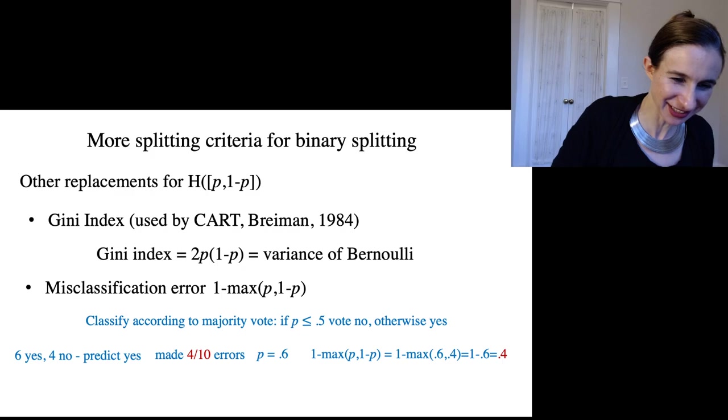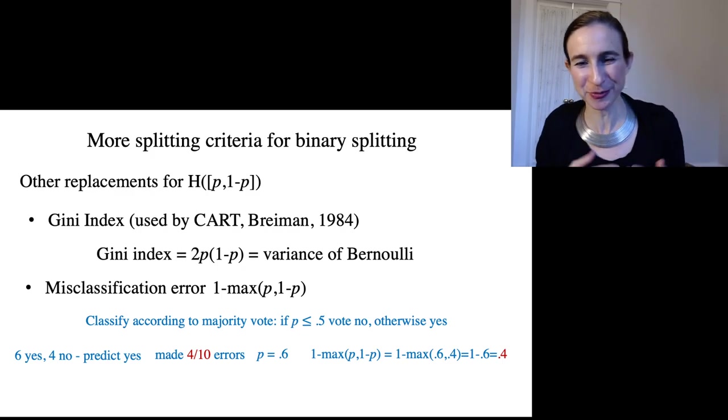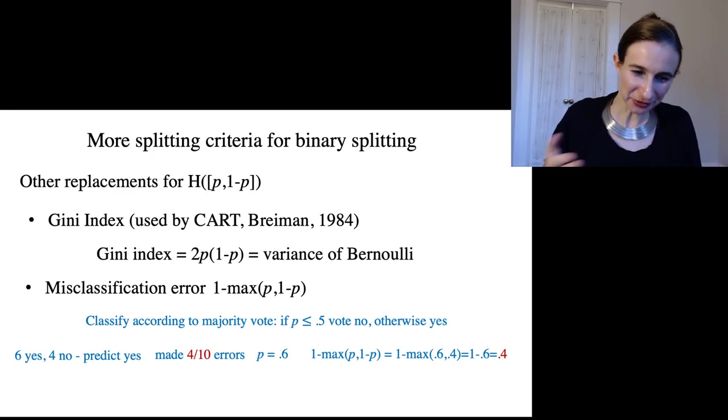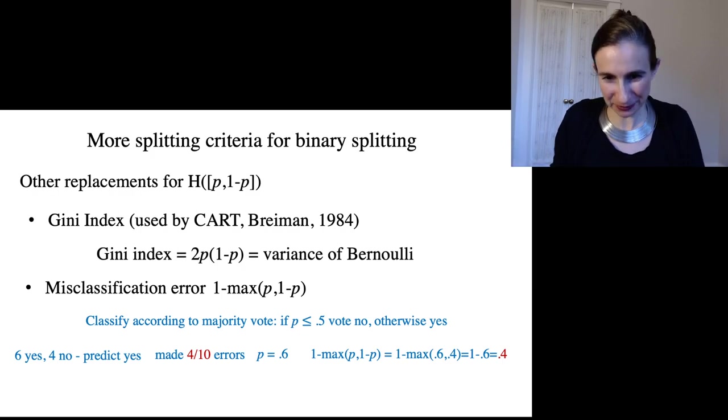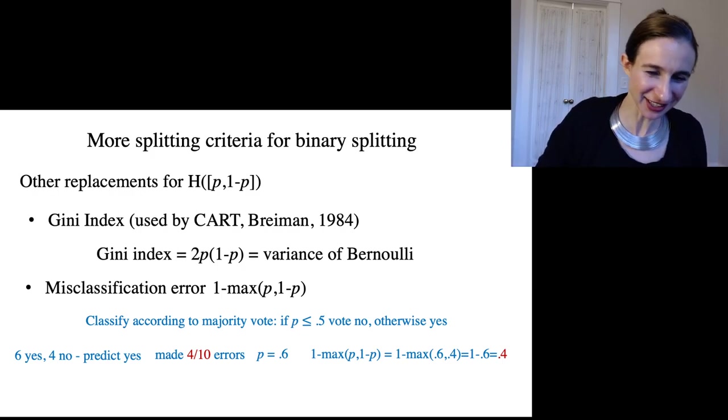So they agree with each other. The fraction of errors we made is four out of ten. That agrees with this misclassification error, which is 0.4. So far so good.